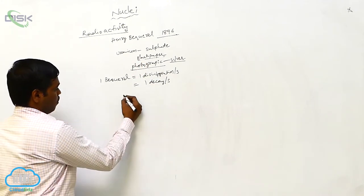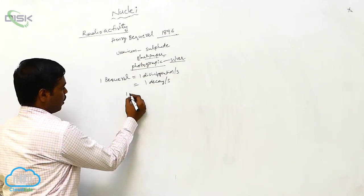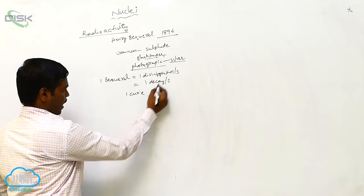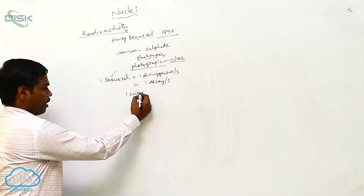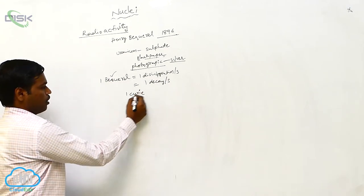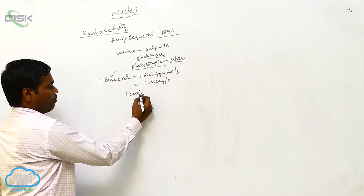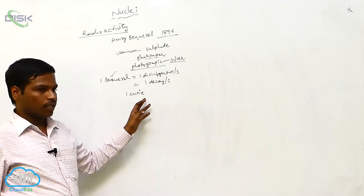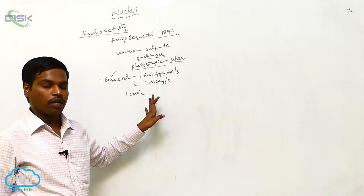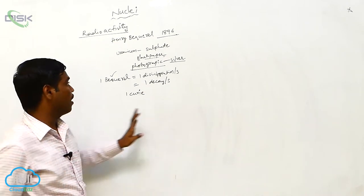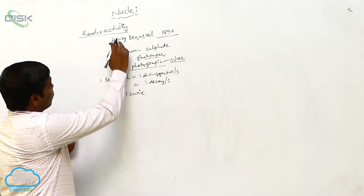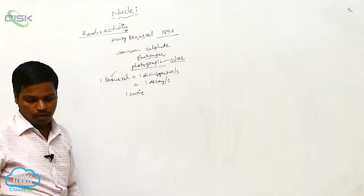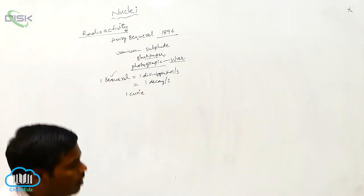One more unit for radioactivity is the curie. Becquerel is the SI unit, and curie is another unit. This radioactivity can be observed naturally in three different ways: alpha decay, beta decay, and gamma decay.